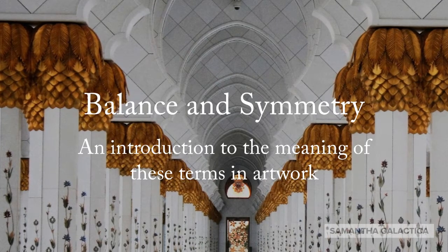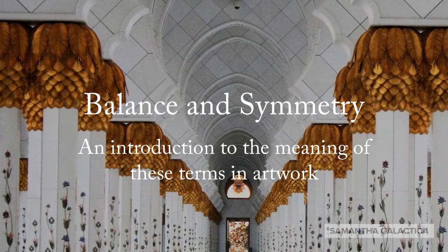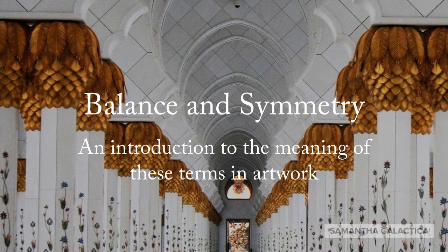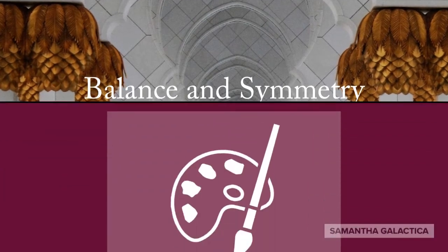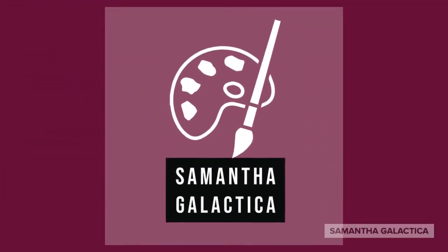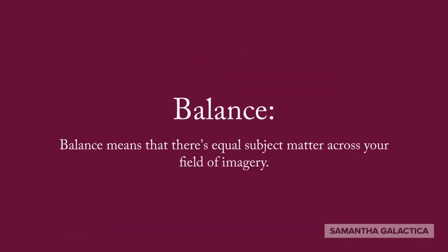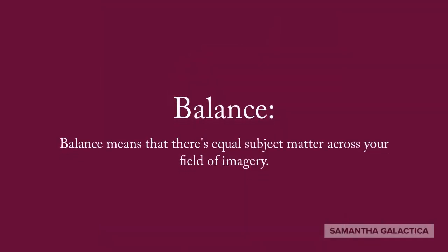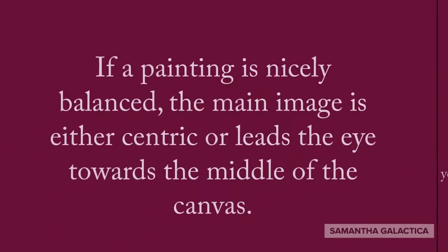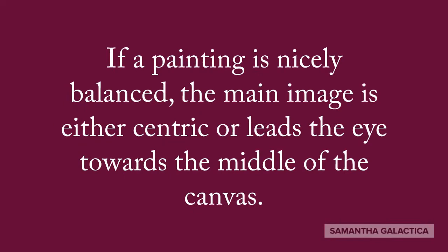Balance and Symmetry: an introduction to the meaning of these terms in artwork. Balance means that there's equal subject matter across your field of imagery. If a painting is nicely balanced, the main image is either centric or leads the eye towards the middle of the canvas.